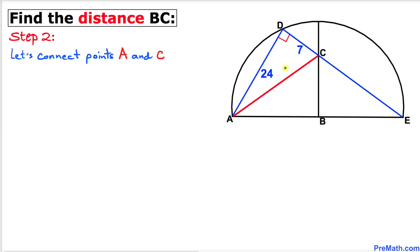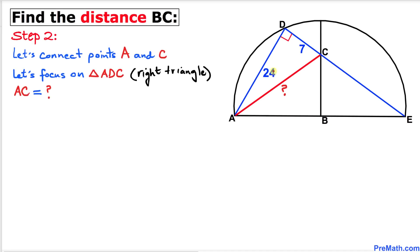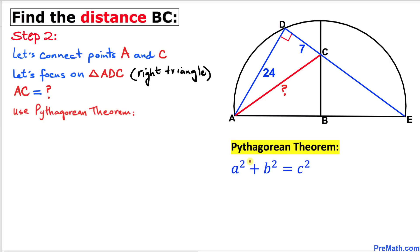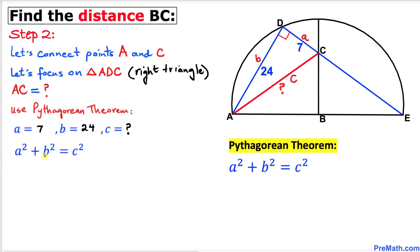With that connection we get triangle ADC. We are going to find the length of line segment AC. Since triangle ADC is a right triangle, we will use the Pythagorean theorem: a² + b² = c². I'll call side CD 'a', side AD 'b', and the hypotenuse AC side 'c'.